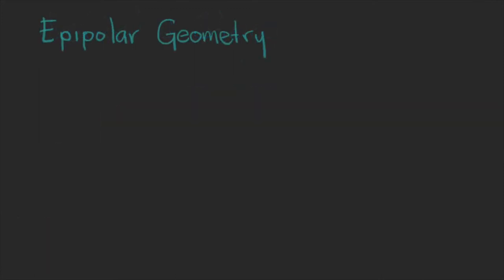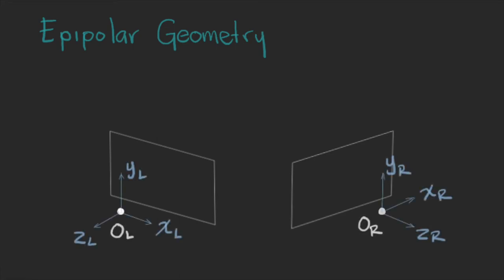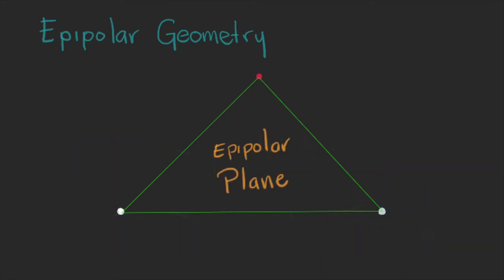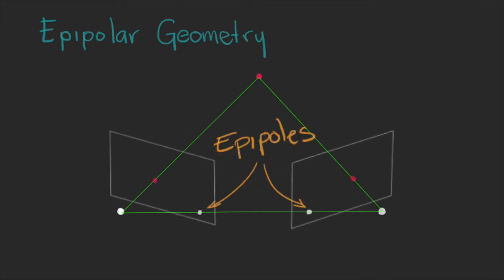So let's start with some concepts of epipolar geometry. We have our two cameras. Each one has their own coordinate system. We see the images with their coordinates U and V. The point is somewhere here, and we can draw the line that goes from each camera origin to the point. Now we draw a line that connects both camera origins. This triangle forms a plane that is called the epipolar plane.